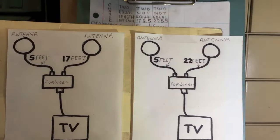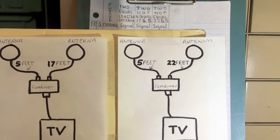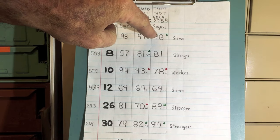In the last example, I added 22 feet of coax to one side and five to the other. You can see it made a difference there as well.